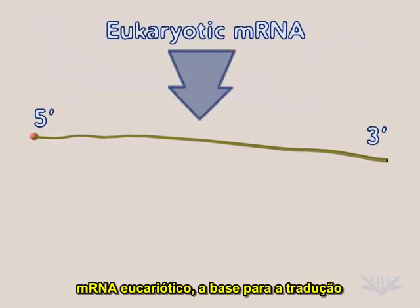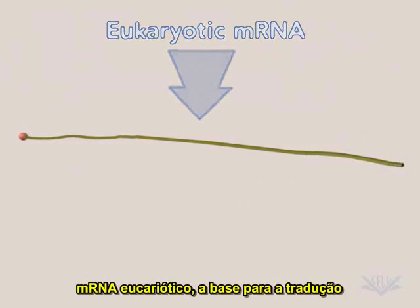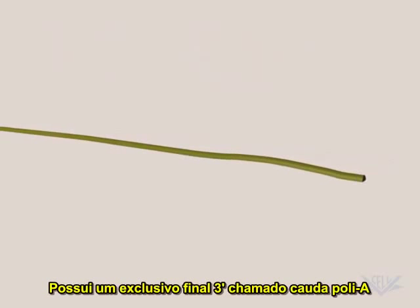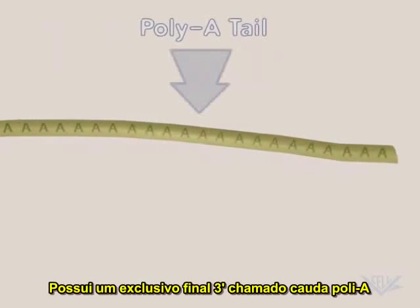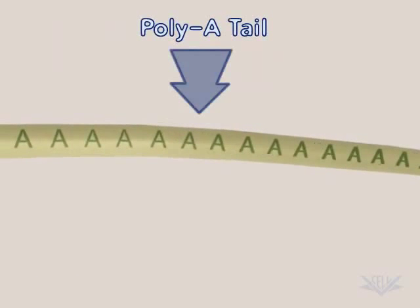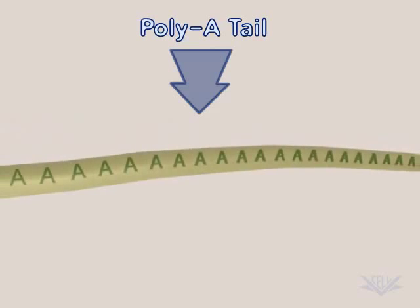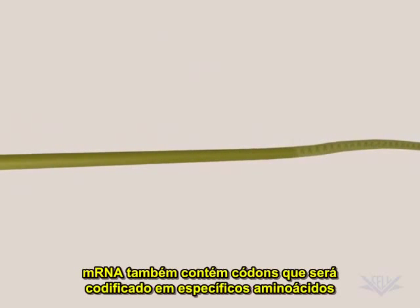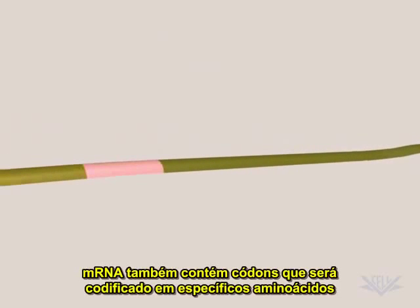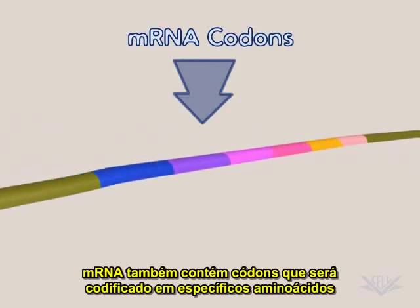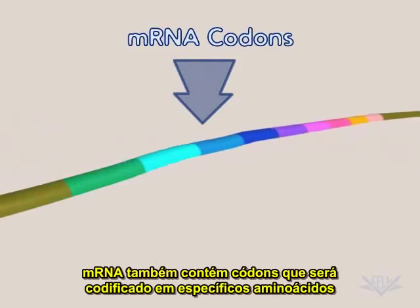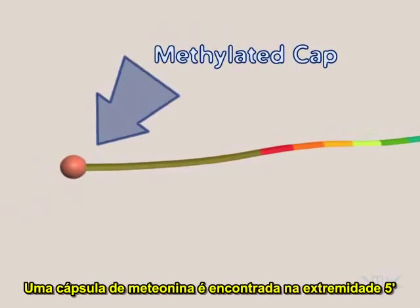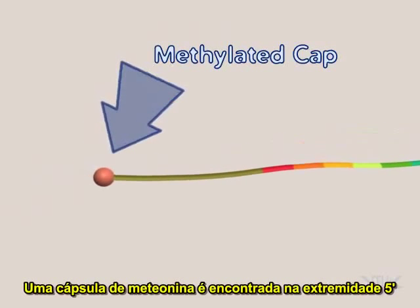Eukaryotic mRNA, the substrate for translation, has a unique 3' end called the poly-A tail. mRNA also contains codons that will encode for specific amino acids. A methylated cap is found at the 5' end.